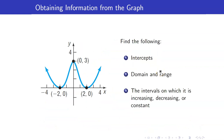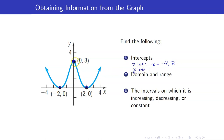For our last example, consider this graph. Let us find the intercepts. For the x-intercepts, we have x equals negative 2 and 2 because of those points. For the y-intercept, the graph intersects the y-axis at the point (0, 3), so y equals 3.